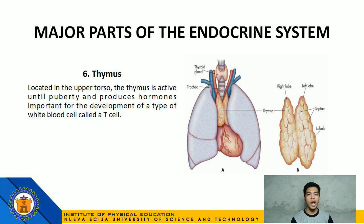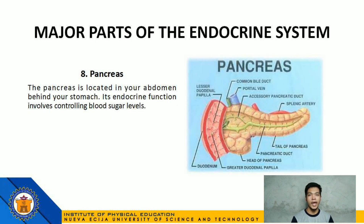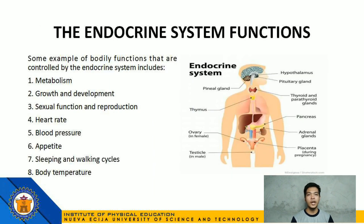Number 6: Thymus — located in the upper torso; active until puberty and produces hormones important for the development of a type of white blood cell called a T-cell. Number 7: Adrenal — one adrenal gland found on top of each kidney; these glands produce hormones important for regulating blood pressure, heart rate, and stress response. Number 8: Pancreas — located in our abdomen behind our stomach; its endocrine function involves controlling blood sugar levels. Some bodily functions controlled by the endocrine system include: metabolism, growth and development, sexual function and reproduction, heart rate, blood pressure, appetite, sleeping and waking cycles, and body temperature.